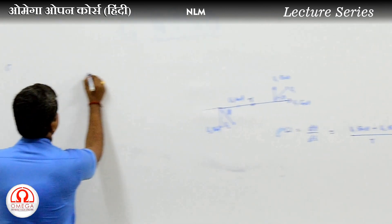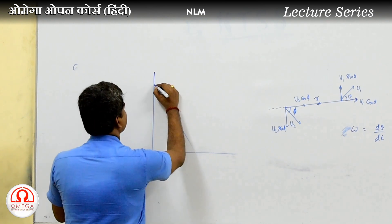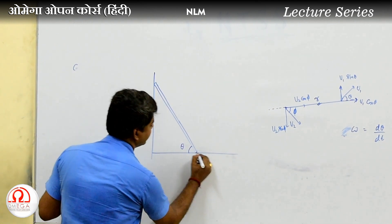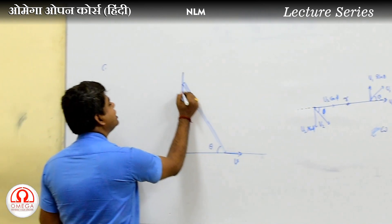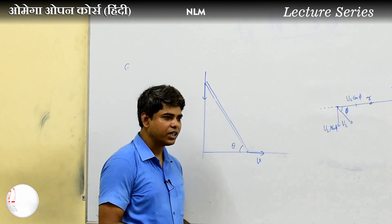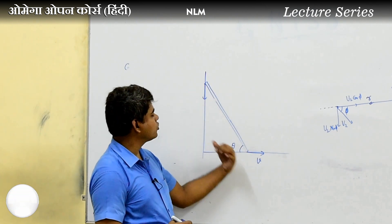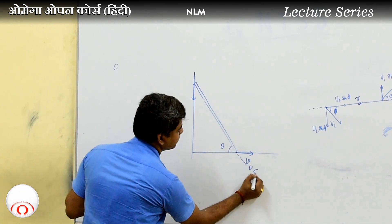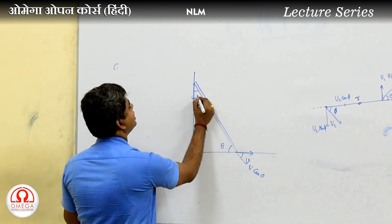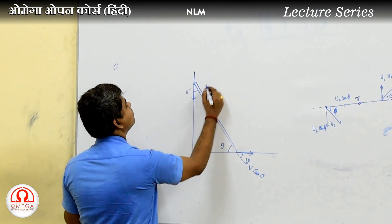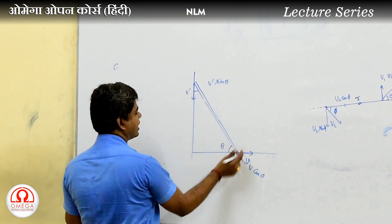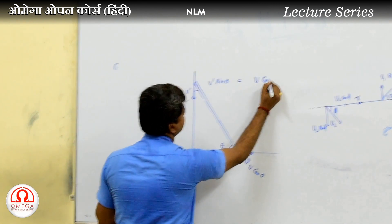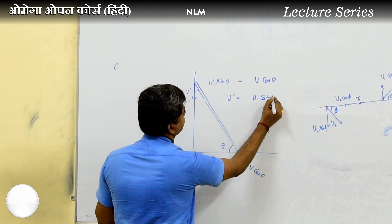This is the most common example. The radial component is V cos theta and the other radial component is V' sin theta, because that angle is 90 minus theta. Then we say that V' sin theta and V cos theta should be equal to V' sin theta — this balances the approach and separation speed.